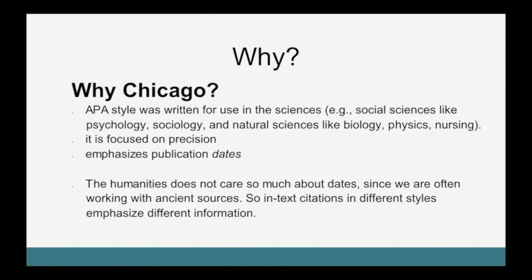As far as writing and citation goes, Chicago and Turabian are the same style. On the other hand, the APA style was written for use in the sciences, including both social sciences like psychology and sociology, as well as natural sciences like biology, physics, and nursing. The APA style is focused on precision, so it emphasizes publication dates because audiences in the sciences want to know that you have up-to-date information. The humanities does not emphasize dates so much since we are often working with ancient sources — things like the Bible or classical works like Aristotle. So in-text citations in different styles emphasize different information.